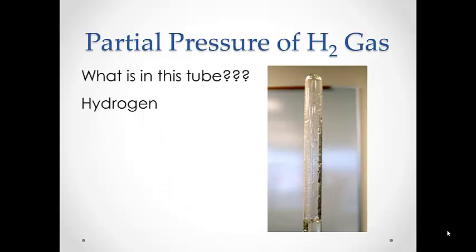We collected the hydrogen gas using water displacement. With this comes the unavoidable problem of water vapor contaminating our hydrogen gas sample. So we actually have two gases — water vapor and hydrogen gas — in our collection tube. Both of these gases are contributing to the pressure and volume of the gas inside the tube, and so in order to accurately calculate the volume of our gas, we need to get rid of the water vapor.